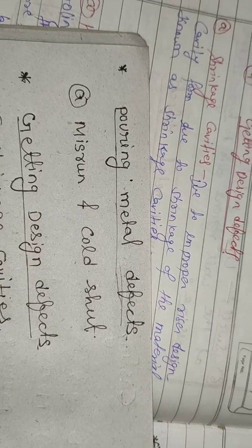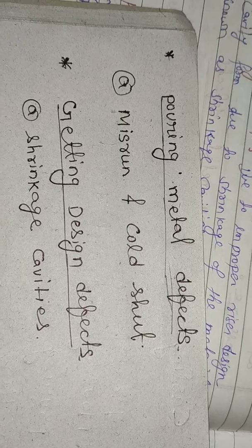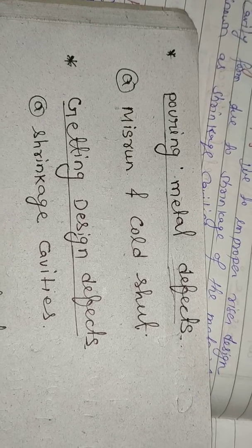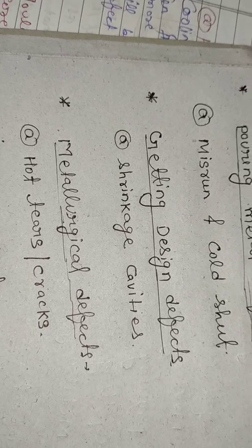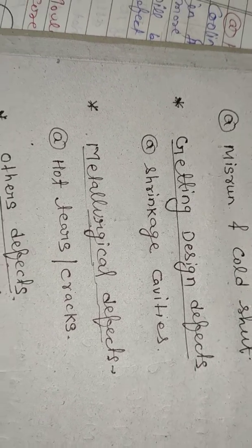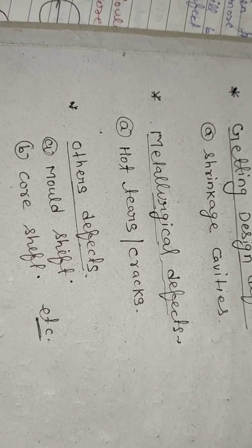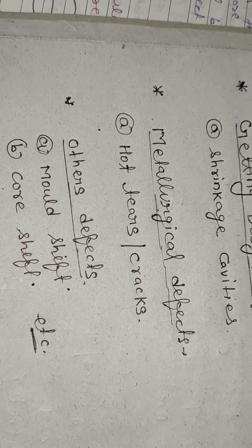The next defect is casting design defect, which includes shrinkage cavities. The next is metallurgical defects, which include hot tears and cracks. Other defects include mold shift and core shift. Other defects are not very important, but all these defects